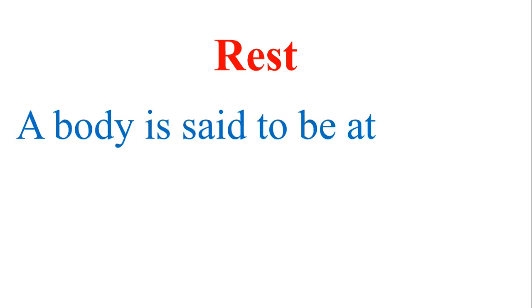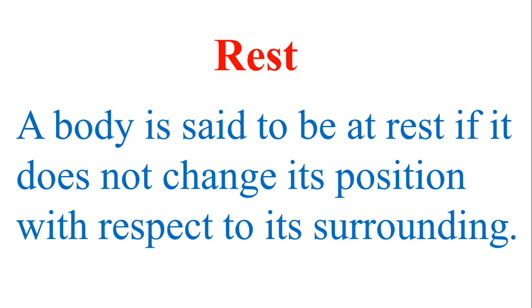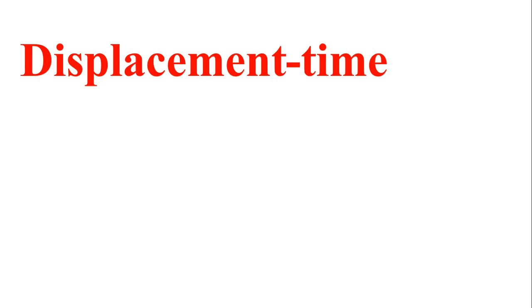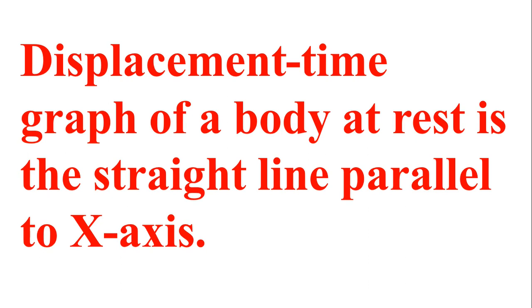Now let's look at another state: a body at rest. First, we need to know what rest means. A body is said to be at rest if it does not change its position with respect to its surroundings. If a body is at the position of 20 meters from the reference point and after one second it remains in the same place, another second also it remains in the same place — every second it stays in the same place, meaning the body is not moving, it is at rest. If we join all these points, we get a straight line parallel to the X axis. The displacement time graph of a body at rest is a straight line parallel to the X axis.